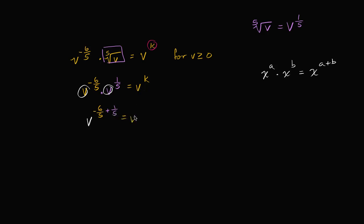Is equal to v to the k. I think you might see where this is all going now. So this is going to be equal to v. So negative six fifths plus 1 fifth is going to be negative five fifths or negative one.